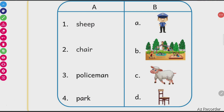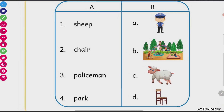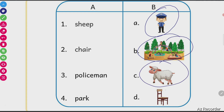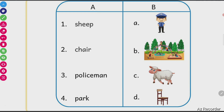In these two columns, we have to match correctly the common name for this person, this place, this animal and this thing. So what is the common name for this person? This is a uniform-wearing person. So this is a policeman. Commonly, uniform-wearing persons are known as policeman.